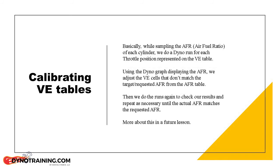While sampling the air-fuel ratio of each cylinder, we do a dyno run for each throttle position represented on the VE table. Using the dyno graph displaying the actual air-fuel ratio as measured by our wideband O2 sensors in the exhaust, we adjust the VE cells that don't match the target air-fuel ratio. Then we load the edited VE tables and do the runs again to check our results, repeating as necessary until the actual air-fuel ratio matches the requested air-fuel ratio.